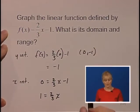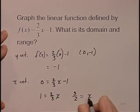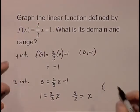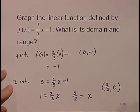1 = (2/3)x. Multiply both sides by 3/2 and we'll get 3/2 = x. So our ordered pair for our x-intercept will be (3/2, 0).